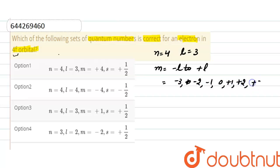And there is only one electron present, so spin can be plus half or minus half.